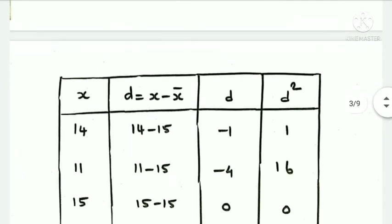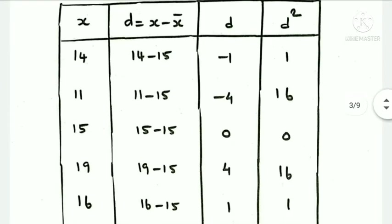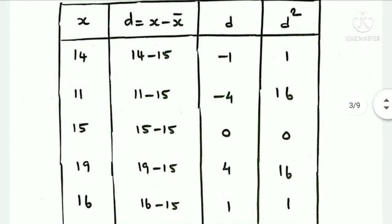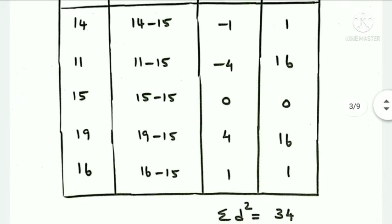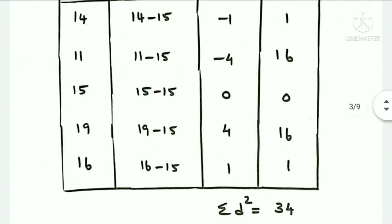The next column is d equals x minus x-bar. The d values are calculated, and then d squared values are computed and added. The summation of d squared is equal to 34.